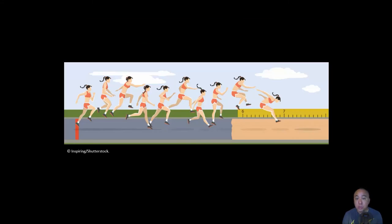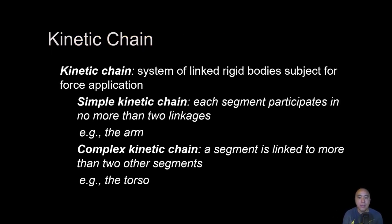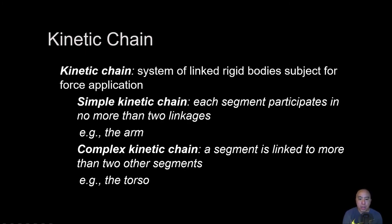The kinetic chain refers to the system of linked rigid segments in the body that move simultaneously to create a certain outcome — such as throwing a football, throwing a baseball, or reaching. It's composed of connected segments that require coordination of different segmental motions. Pitching is a perfect example of an open kinetic chain, where the pitcher creates ball velocity of 90 to 95 miles per hour by coordinating different parts of the body through a proximal-to-distal sequencing pattern.